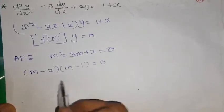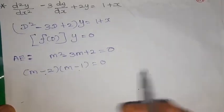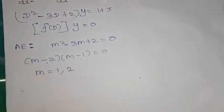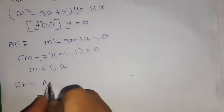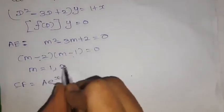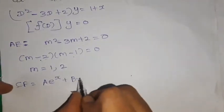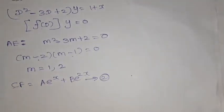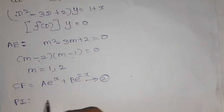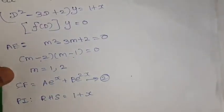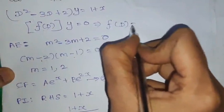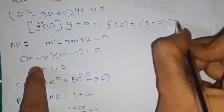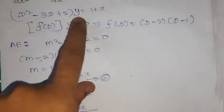The complete solution is y = A·cos(√2·x) + B·sin(√2·x) + (1/2)(x² − 1). Now the next problem: (D² − 3D + 2)y = 1 + x. Forming the auxiliary equation: m² − 3m + 2 = 0, factoring as (m−2)(m−1) = 0, giving roots m = 1, 2. Roots are real and different, so CF = A·e^x + B·e^(2x). This is equation 1.